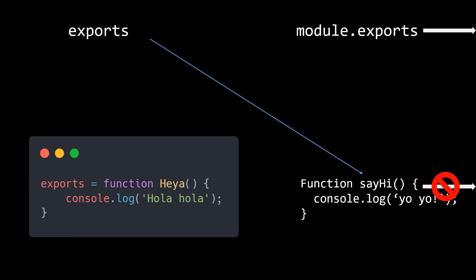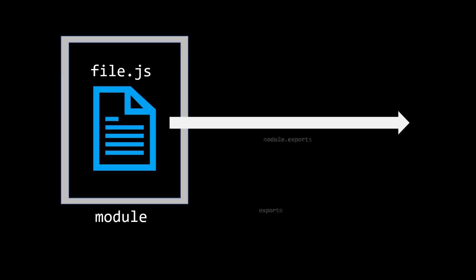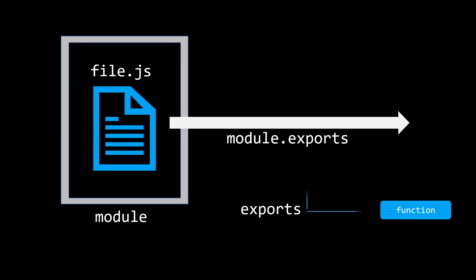To sum that all up: module.exports is what will get exported out of the Node module. The exports global is just an additional convenience provided to us for ease of use. We can go on adding properties to it that we want to expose, but we should not change its reference to anything else, as that defeats the main purpose altogether.